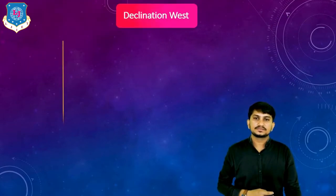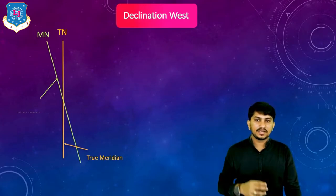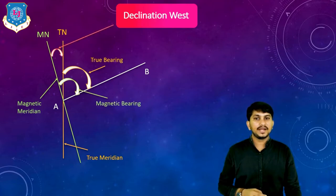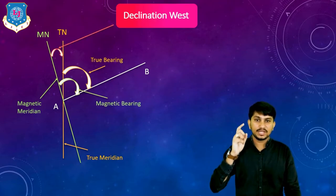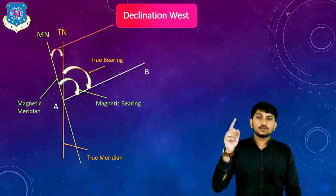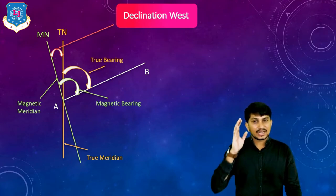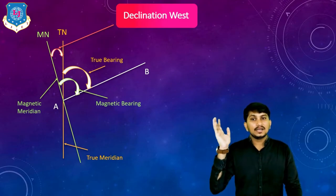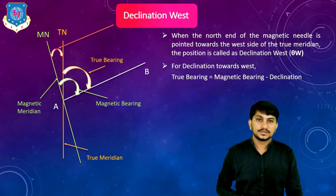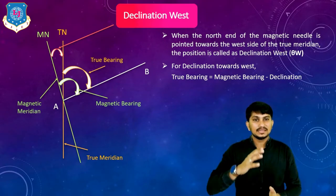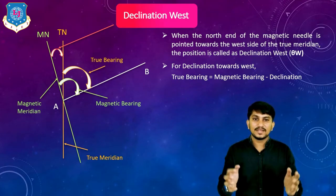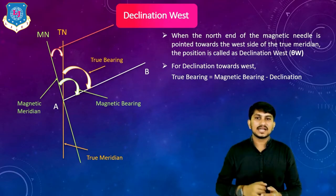First is declination west. Suppose there is a true meridian and this is the magnetic meridian. Suppose there is one line AB. The horizontal angle made by the line with true meridian is called as true bearing. The horizontal angle made by the line with respect to magnetic meridian is called as magnetic bearing. The difference between true bearing and magnetic bearing is called as declination. If the declination lies towards the west direction, it is called as declination west. When the north end of the magnetic needle is pointed towards the west side of the true meridian, the position is called as declination west.